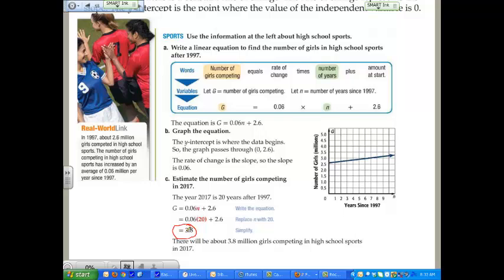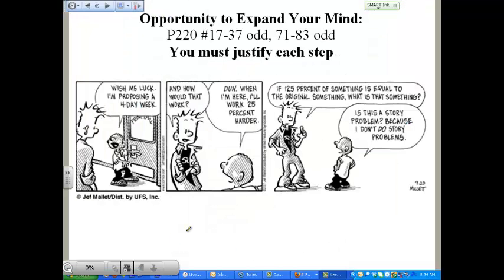Your homework for this section is page 220, number 17 through 37 odd, number 71 through 83 odd. Don't worry about this justify each step thing. I think we've pretty well beat that horse, so let's move on and just give me the solution to solve the problems. You should know the steps by now.